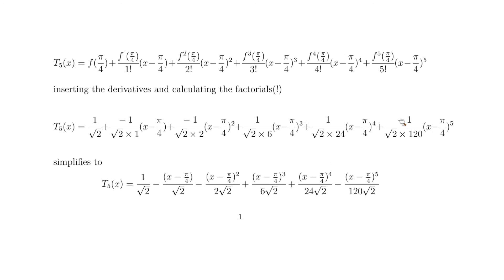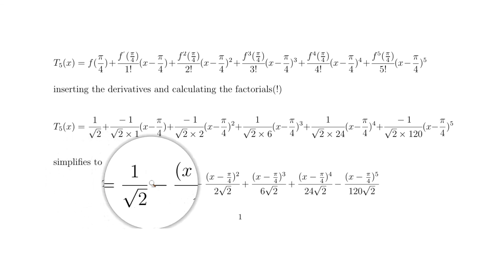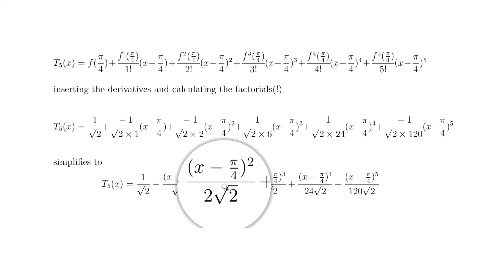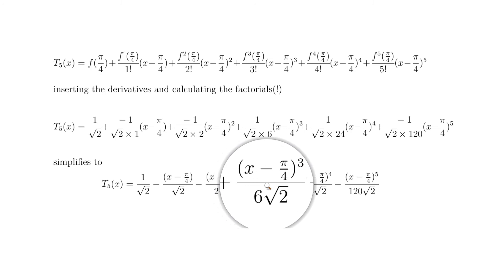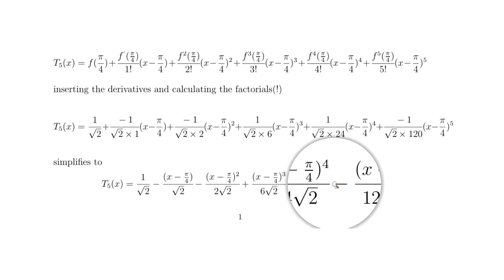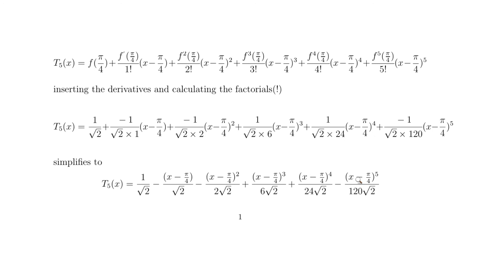So the final Taylor polynomial for cosine of x at π/4 is: T₅(x) = 1/√2 − (x − π/4)/√2 − (x − π/4)²/(2√2) + (x − π/4)³/(6√2) + (x − π/4)⁴/(24√2) − (x − π/4)⁵/(120√2). That's your answer — thanks for watching.